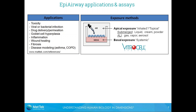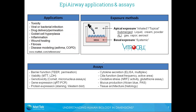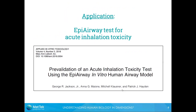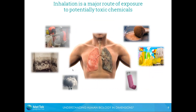Following exposure, tissues can be assessed with a variety of endpoints including barrier function, viability, gene and protein expression, and mucus production. The application I'm focusing on today is our EpiAirway test for acute inhalation toxicity. Inhalation is a major route of exposure to potentially toxic chemicals, whether occupational, environmental, or household consumer exposure, so there is a significant need to assess the safety and risk of inhaled chemicals.